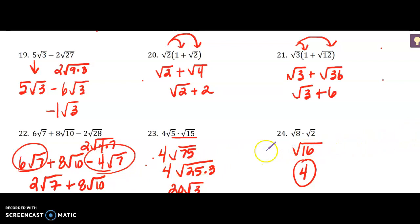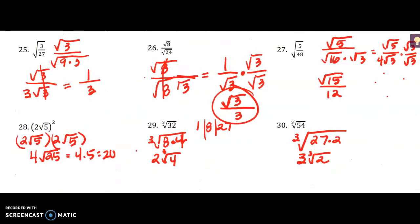Number 23: these cannot be simplified, so I just multiplied them together to get 4 square roots of 75. I can then factor that into 25 times 3; the square root of 25 is 5, and 5 times 4 is 20, so 20 square roots of 3. For number 24, I just multiplied these together to get the square root of 16, which is exactly 4.